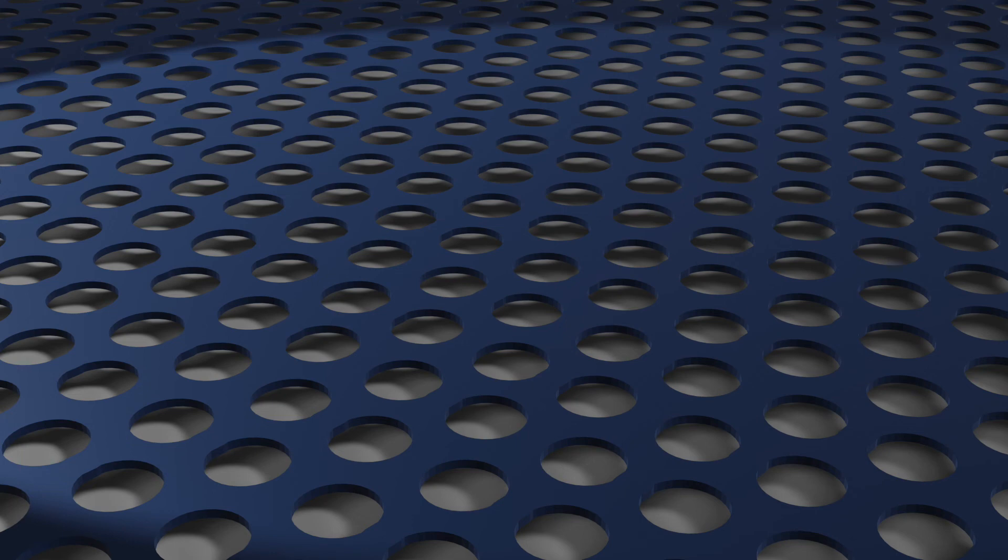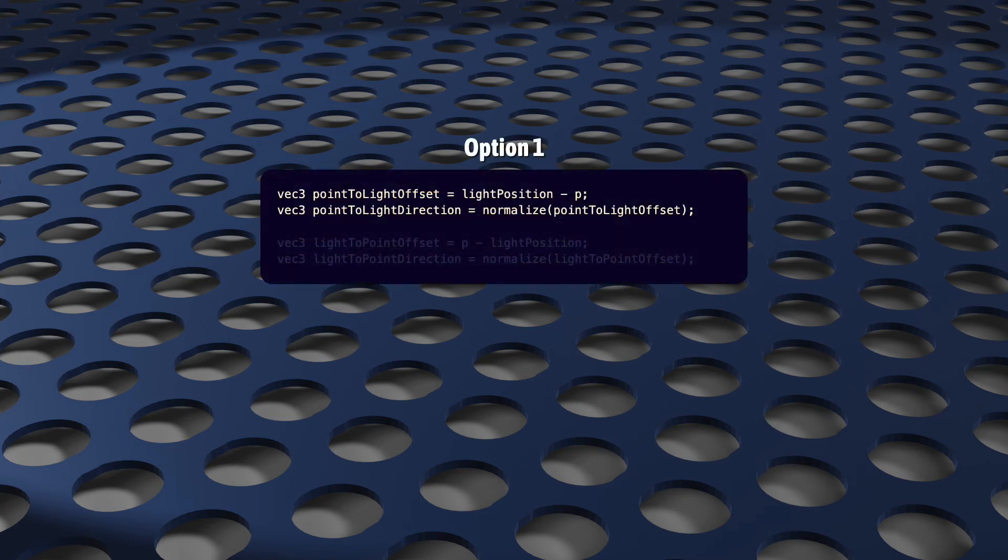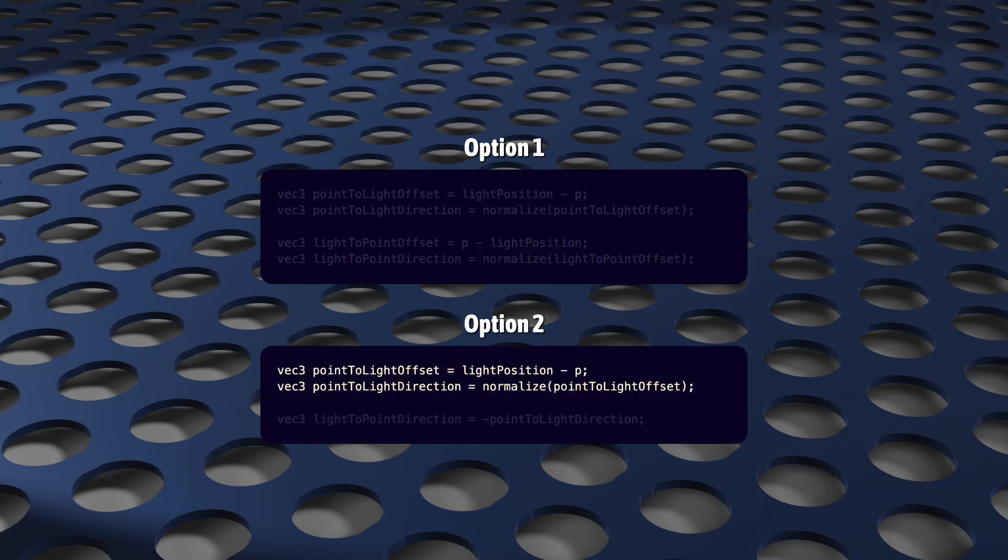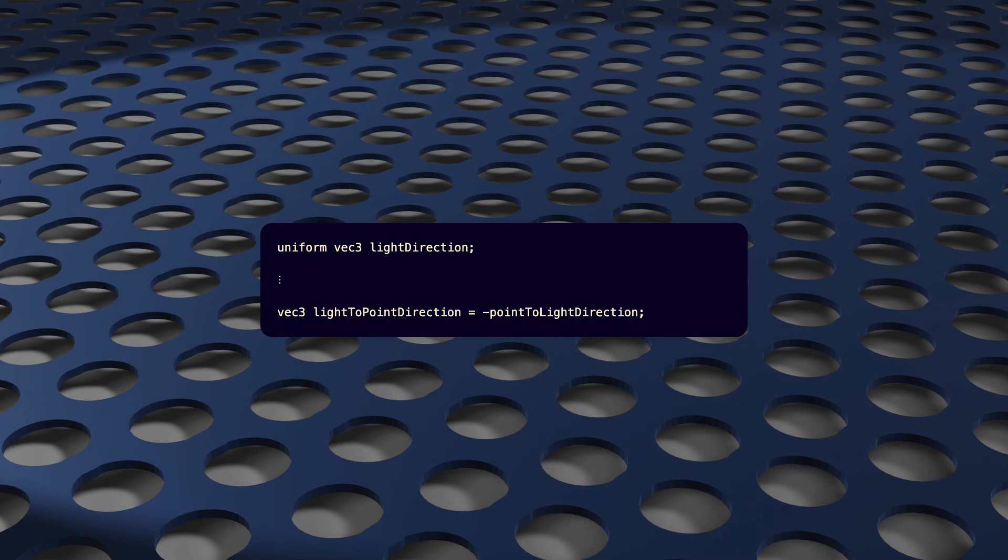Next, we calculate the direction from the light to the fragment. And we just learned how to do that. We could subtract the fragment position from the light position. That's sort of the opposite of what we did before, and then normalize the result. But since we already calculated the direction from the fragment to the light for the diffuse brightness calculation, we can just take the negative of that. It's the same thing. So, now we have two directions. We have the direction the light is pointed, and we have the direction from the light to the fragment.